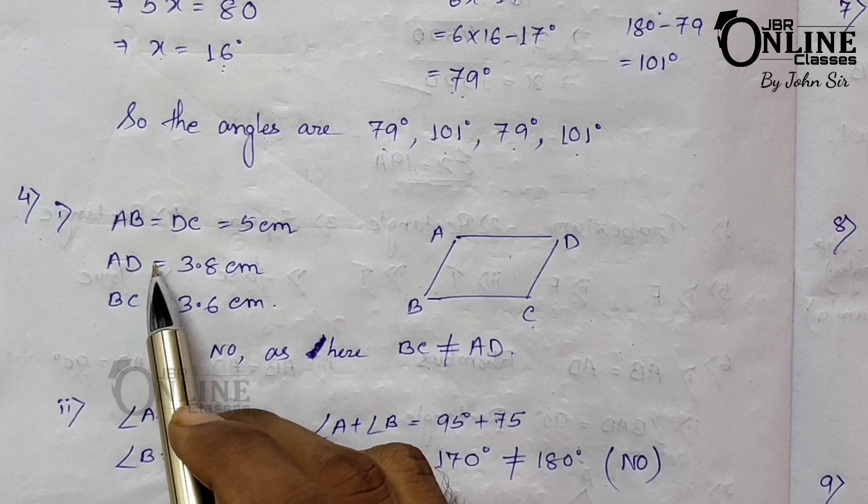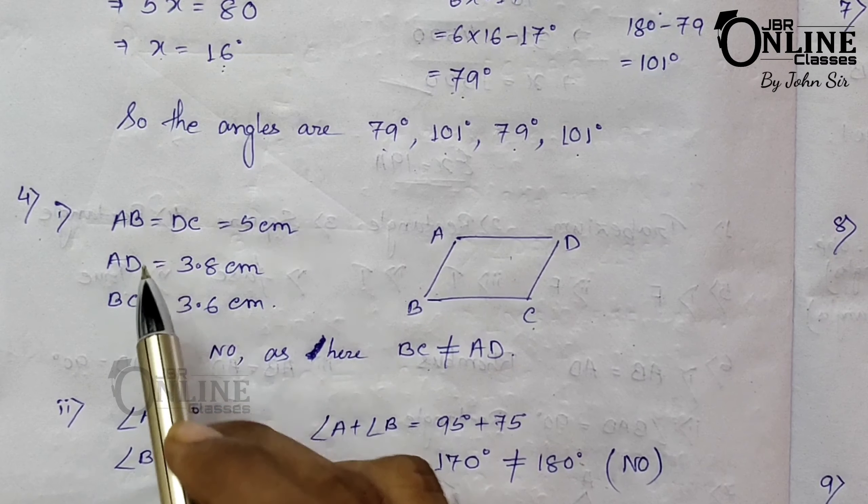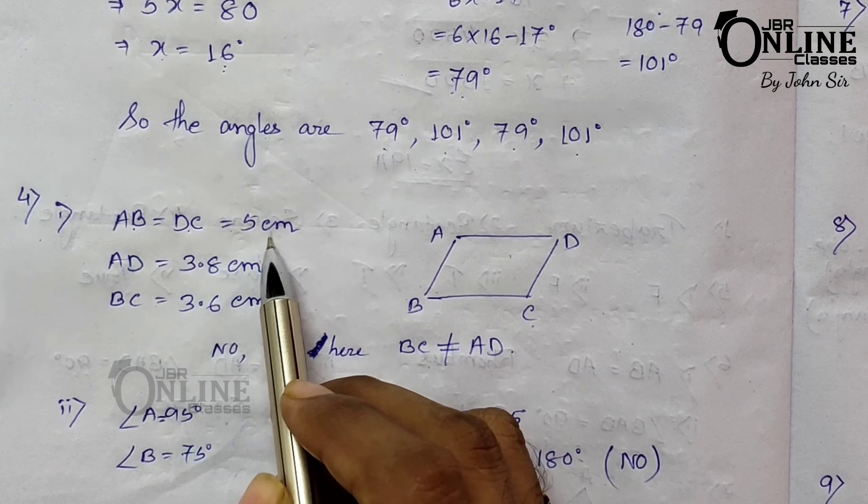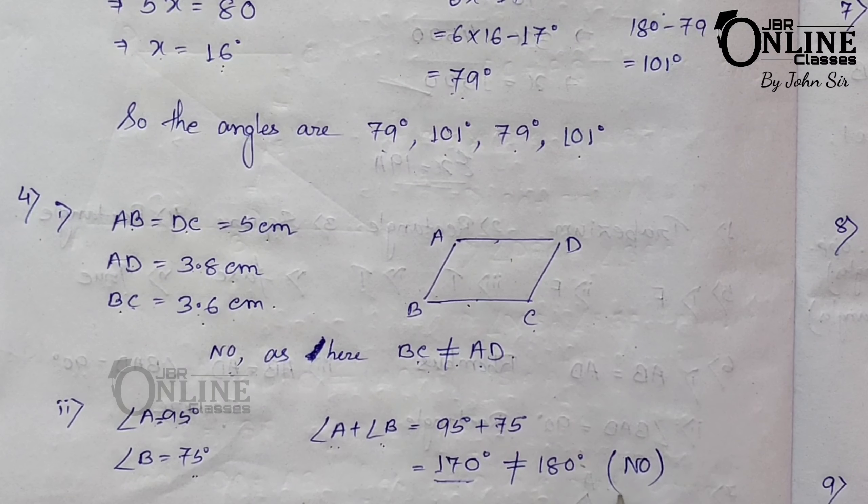Number four: can quadrilateral ABCD be a parallelogram? Condition one: AB = DC = 5 cm, AD = 3.8 cm, BC = 3.6 cm. Here AD and BC are opposite sides but they are not equal. In a parallelogram opposite sides must always be equal, so this is not a parallelogram. Condition two: angle A = 95° and angle B = 75°. The sum of two adjacent angles must be 180°, but here the sum is 170°, so it's also not possible.